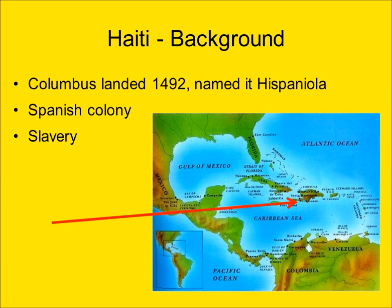Christopher Columbus landed on the island in 1492, naming it Hispaniola. However, there were existing indigenous societies on many of the islands of the Caribbean that extend back at least 6,000 years. After the island became a Spanish colony, the Taino population was wiped out by violence and disease. In particular, smallpox was especially deadly to the island's original inhabitants. A Taino population that once numbered at least in the hundreds of thousands — and some sources indicate perhaps a million or more — was eradicated within several decades of the arrival of the Spanish.